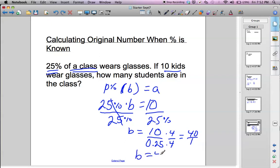So your final answer is B equals 40. So the class size is 40, then 25% of 40 is 10. That does make sense. Okay, so it looks like we got the right answer.